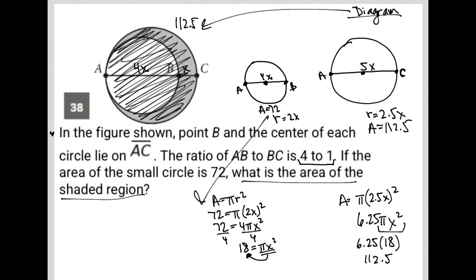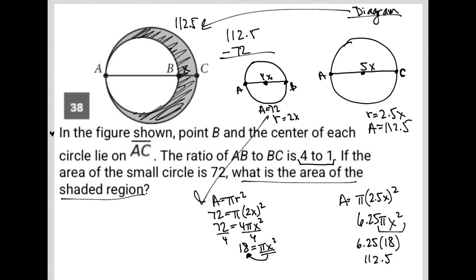And then all I'm doing is coming in and erasing, basically. I'm erasing out the smaller circle, which I know is 72. In essence, that means I'm subtracting, so 112.5, I'm subtracting 72 from the 112.5 that was initially shaded.